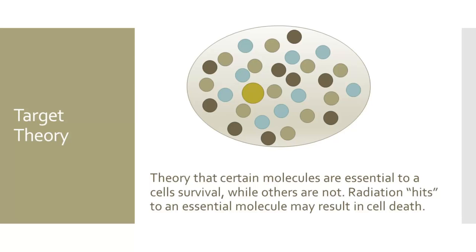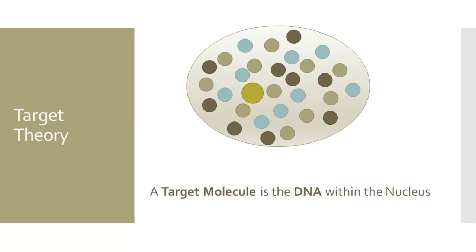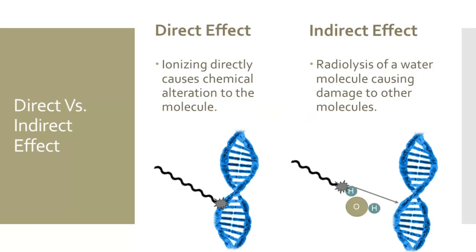The target molecule is the queen, and the target molecule of a human cell is the DNA within the nucleus. When the DNA is deactivated by a radiation hit, the cell can no longer function properly. This leads to cell death or radiation-induced cell mutations. One thing to clarify is that radiation interactions are random and do not choose the target. Target interactions happen indiscriminately, and they can happen in two ways.